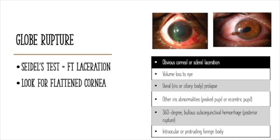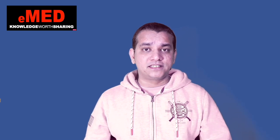Volume loss to the eye will be obvious, so you may see a flattened cornea. Look for prolapse of the uveal body — that is, iris or ciliary body prolapse — or any other iris abnormality. A 360-degree bullous subconjunctival hemorrhage, or an obvious intraocular or protruding foreign body, are also key signs. These six signs direct you toward a diagnosis of suspected globe rupture.